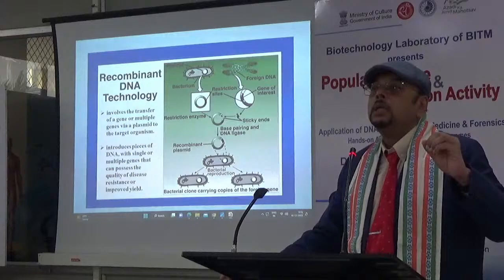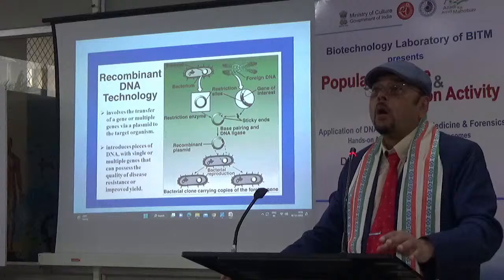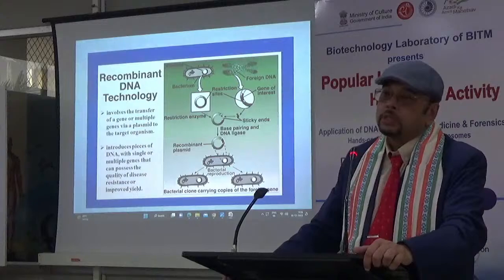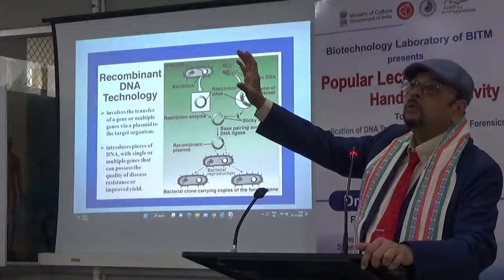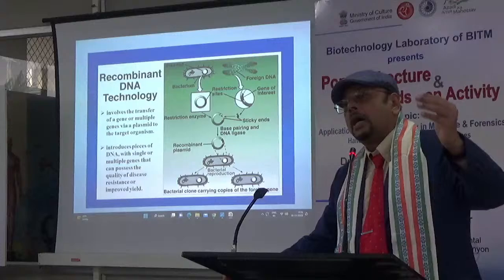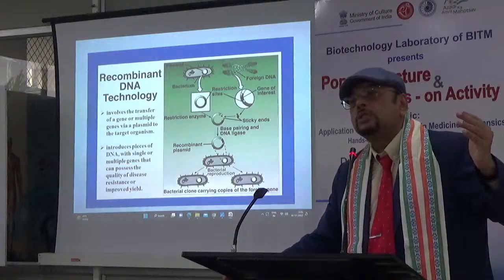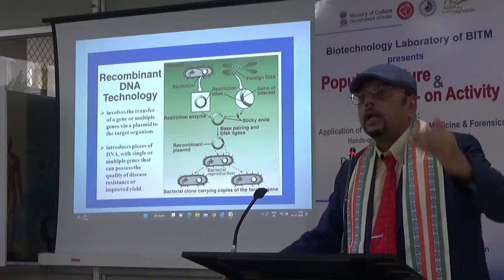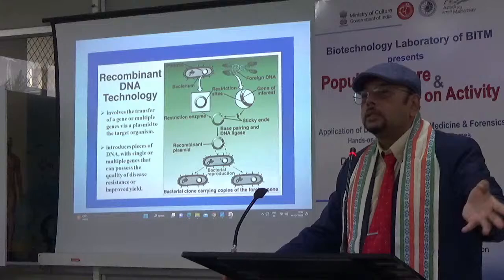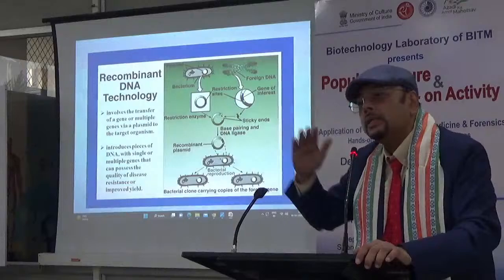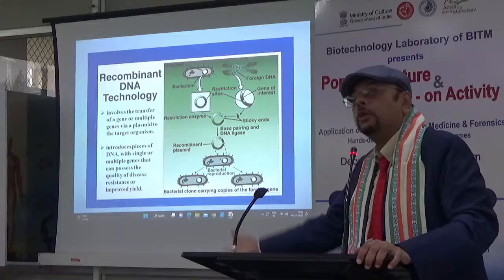Norman Borlaug passed away in 2010. The Dallas Morning News headline said: 'Man passed away who fed billions.' He developed Mexican wheat varieties that produced three times the grains. He applied similar techniques to legumes and other crops. This is how science develops from basic research — basic research is extremely important before you go to applied aspects.